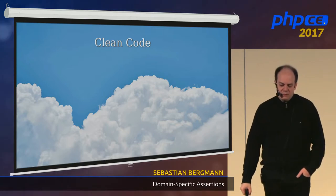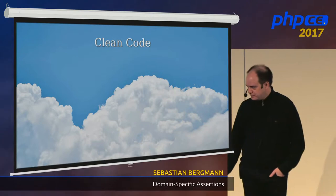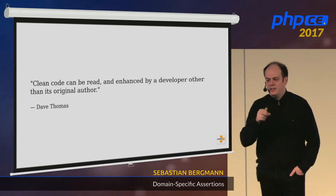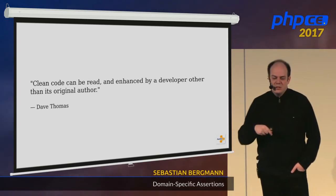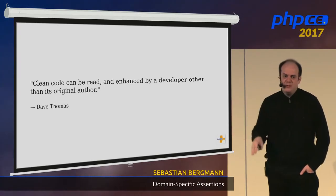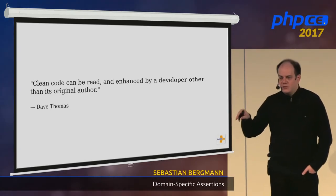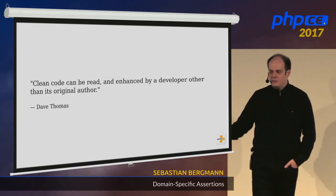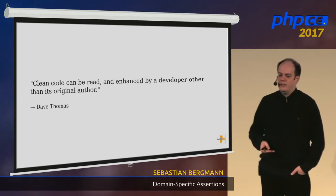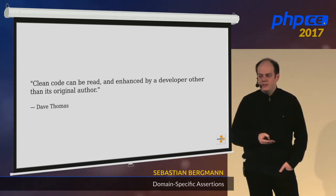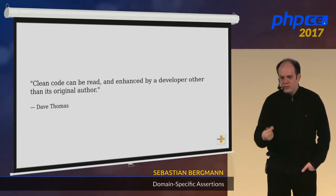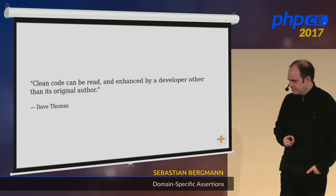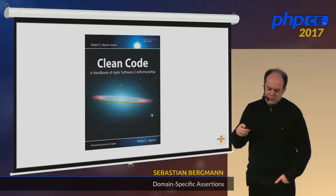Coming at that problem from a different angle was Uncle Bob and the Clean Code movement. Clean code is code that can be read and enhanced by a developer other than the person who wrote it. PHPUnit is now 16 years old. There are pieces of code in its codebase that are that old. Sometimes I look at that code — git blame tells me I wrote it five or ten years ago — and I no longer understand it. In most cases, what I do then is delete the code, understand the problem, and write code that solves it in a better, more understandable way.